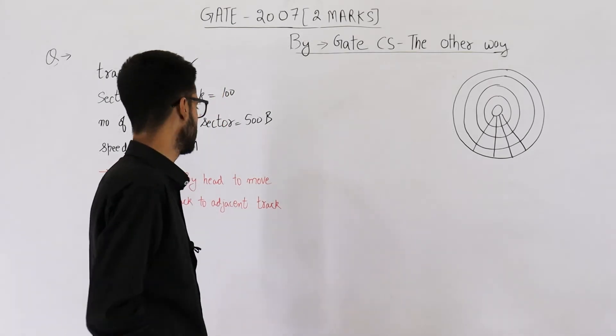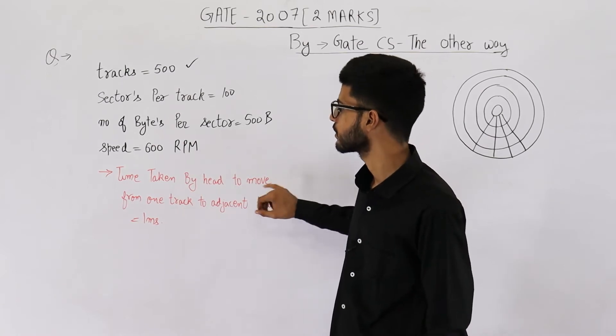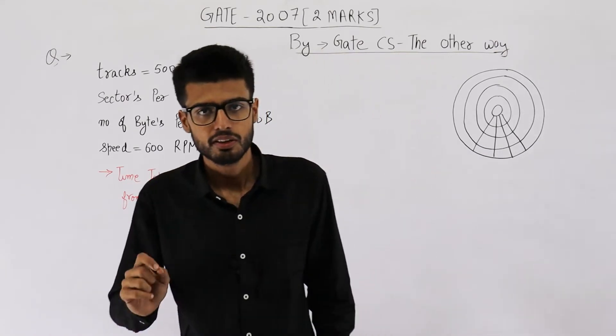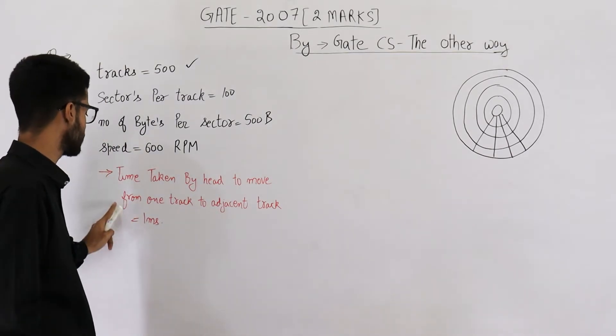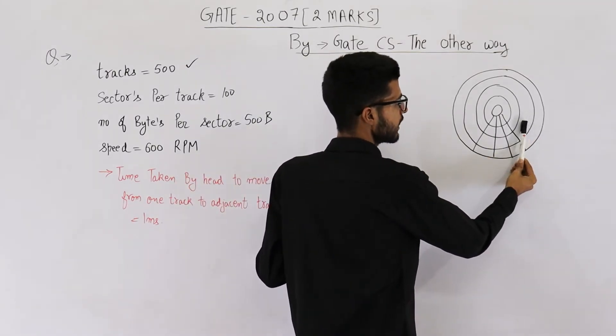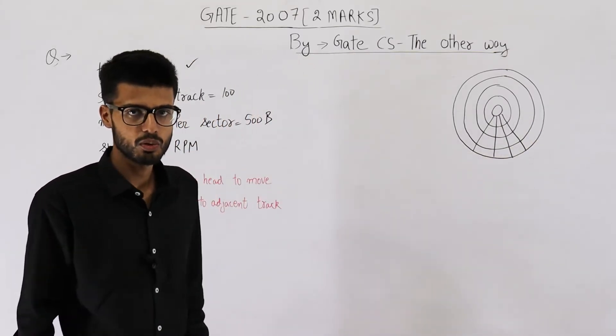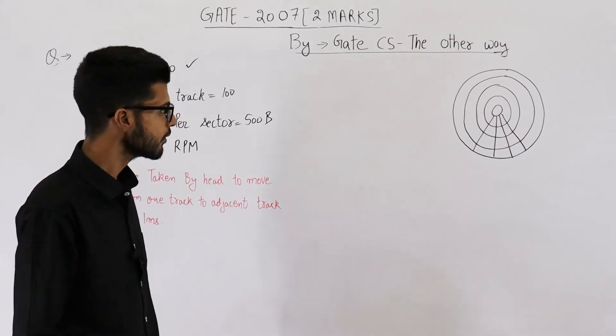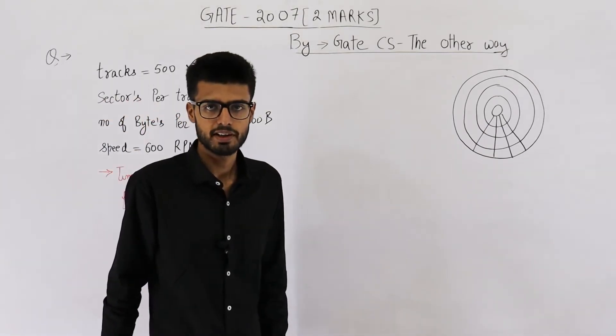Let's try to solve this one. There's one interesting line mentioned in the question. It says time taken by head to move from one track to adjacent track is 1 millisecond. That means they haven't specified the seek time directly, but you can calculate the seek time from this information. They are saying for moving across one track you require 1 millisecond. But we don't know how many tracks we need to cross because we don't know the exact track numbers that are to be accessed.